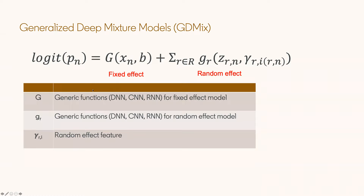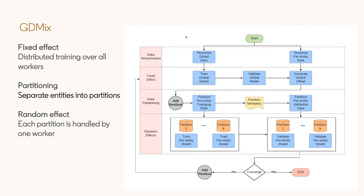For example, the capital G or the lowercase G here represents different random effects. You can see the GD mix training process in this diagram. We train the fixed effect first with all training data. Then, based on the training results of the fixed effect, we partition the data with respect to different members and train the random effect for each member separately. Training ends when both two steps have converged.